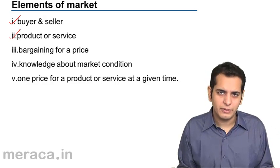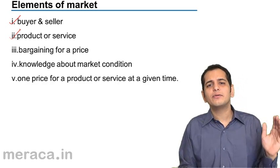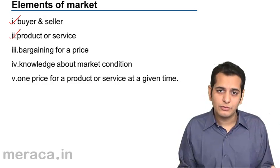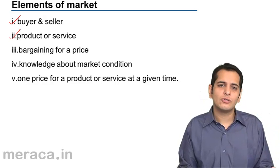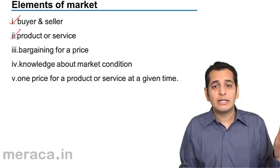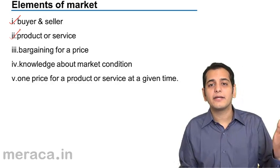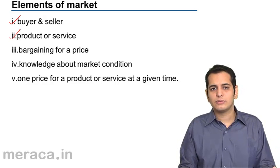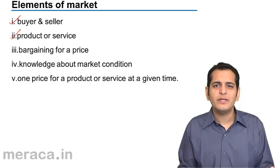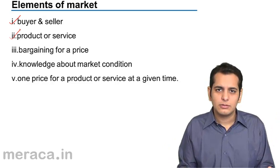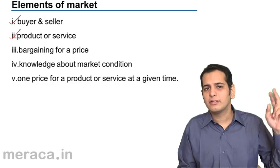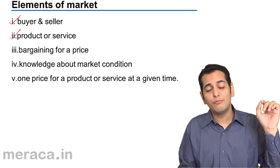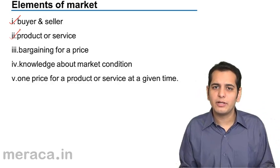Services also can be there. We generally tend to limit ourselves to products, but markets can also have services. There can be a market of services — like financial services, banking services, insurance, and education. So market can be about both services and products, but one of the two needs to be there to call it a market.